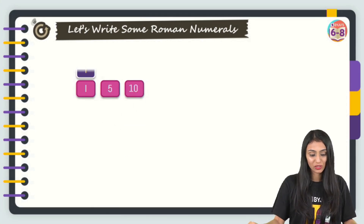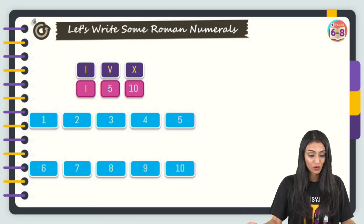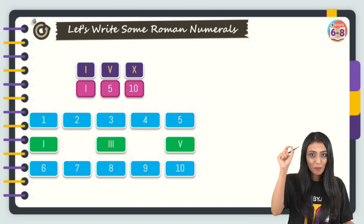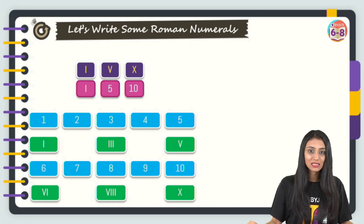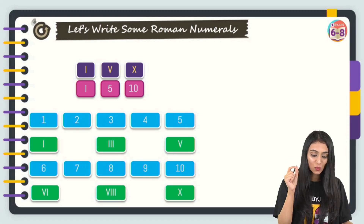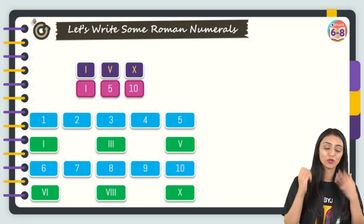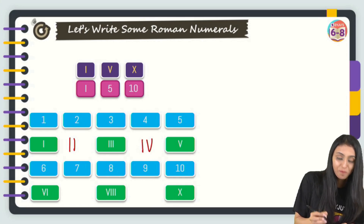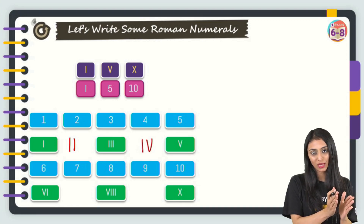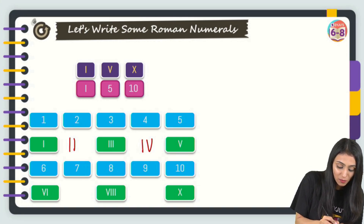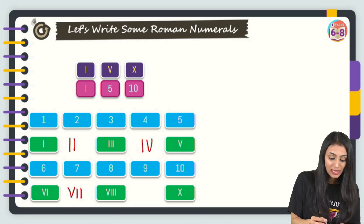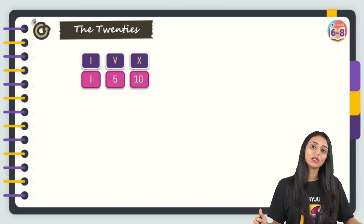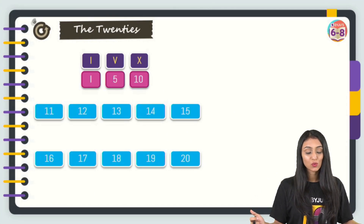Let's learn how to write Roman numerals. We already know 1 = I, 5 = V, 10 = X. For 2, write two bars (II). For 3, write three bars (III). For 4, write one bar before V (IV). For 6, write V and one bar (VI). For 7, write V and two bars (VII). For 8, write V and three bars (VIII). For 9, write one bar before X (IX).